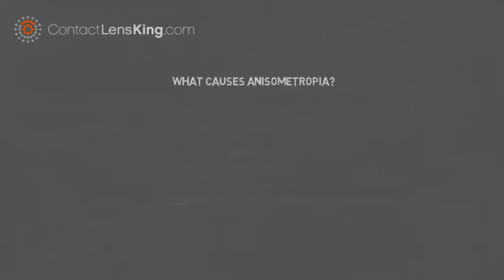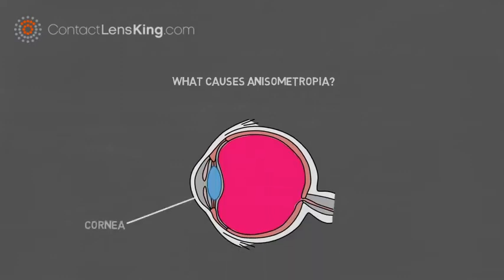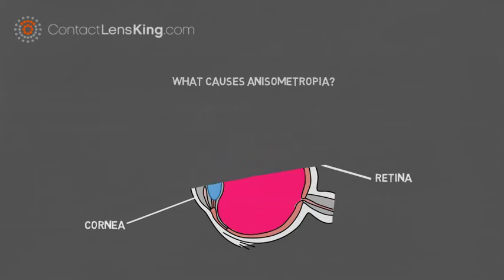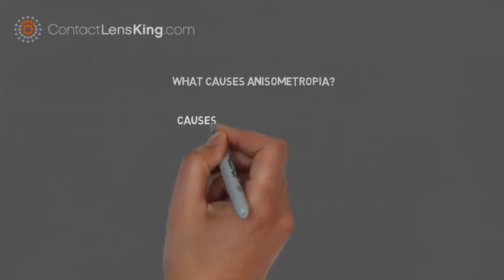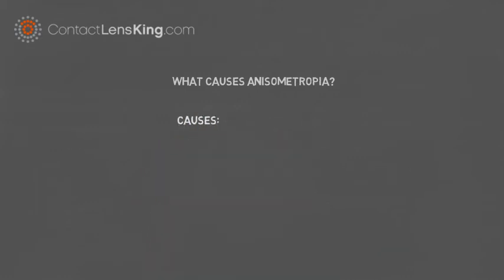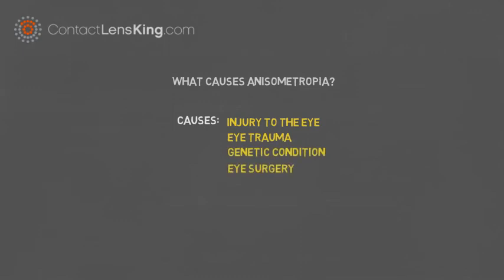But what causes anisometropia? There are various parts of the eye that work together, and if any of these are impacted, it could alter the ability of the eye to focus. This can be a result of a variety of causes, including the following: injury to the eye, eye trauma, a genetic condition, or an eye surgery.